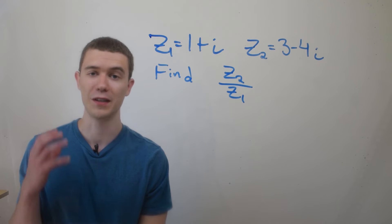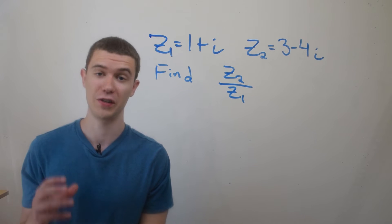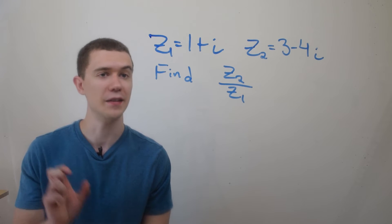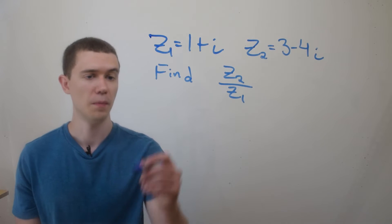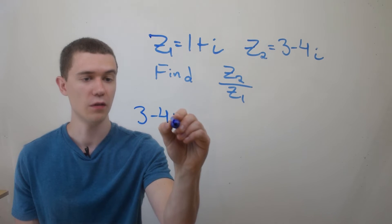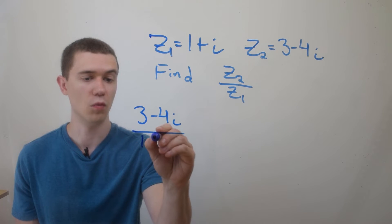So now that we've introduced the complex conjugate, we can do division of complex numbers. In this example, I've got two different complex numbers, and I want to divide the second by the first. So let's set it up. It'll look just like a fraction, 3 minus 4i over 1 plus i.